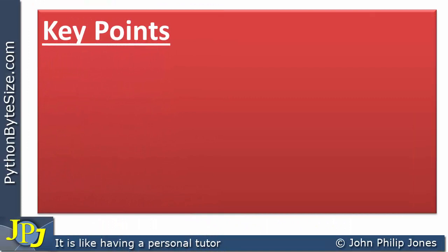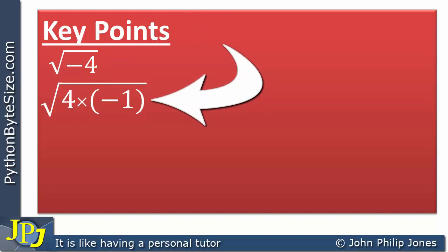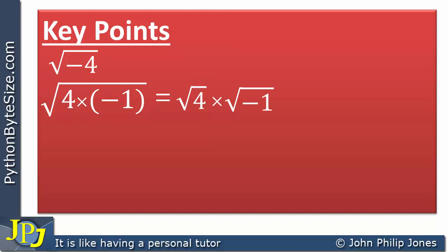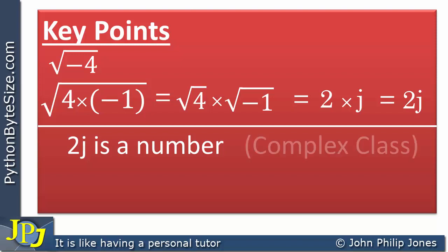The key points I'd like you to take from this video are as follows. Taking the square root of minus 4: I rewrite it as 4 times minus 1, then split it into the square root of 4 times the square root of minus 1. The square root of 4 is 2, and the square root of minus 1 is replaced with j, giving 2j. So 2j is an imaginary number — not an integer or a float, but a number that is an instance of the complex class. And if a variable is assigned 2j, it is a name bound to an instance of the complex class.